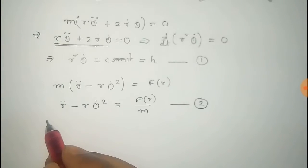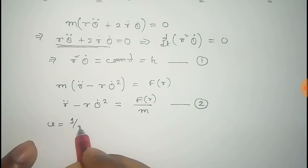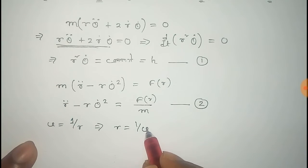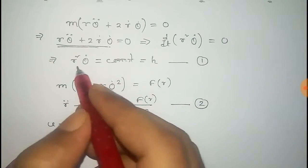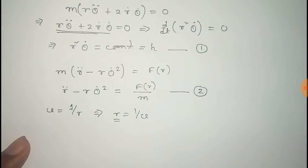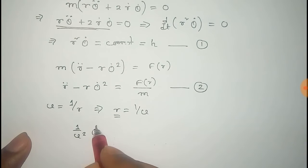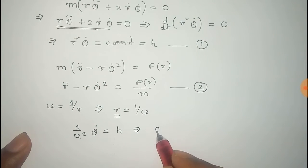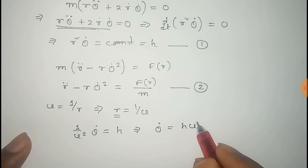Now we consider a substitution: let U equal one over R, so R equals one over U. Using this in equation number one, we get (1/U) Theta dot equals H, and from this Theta dot equals H U squared.